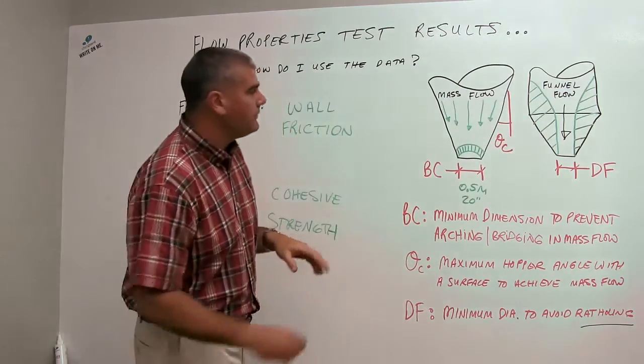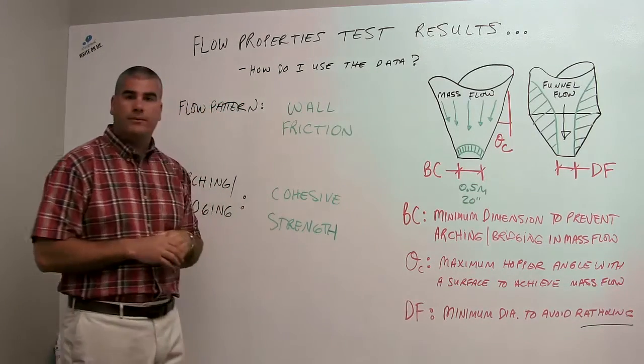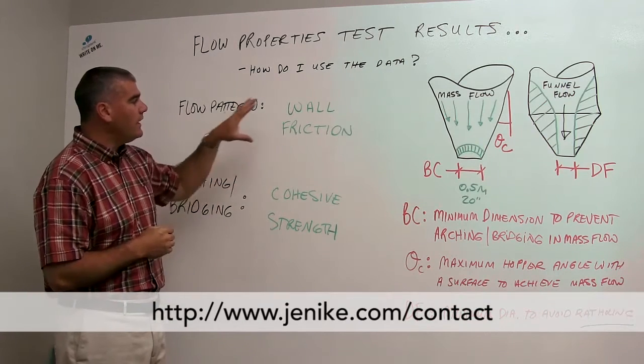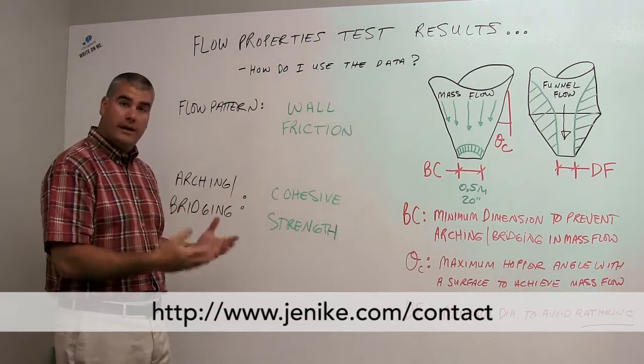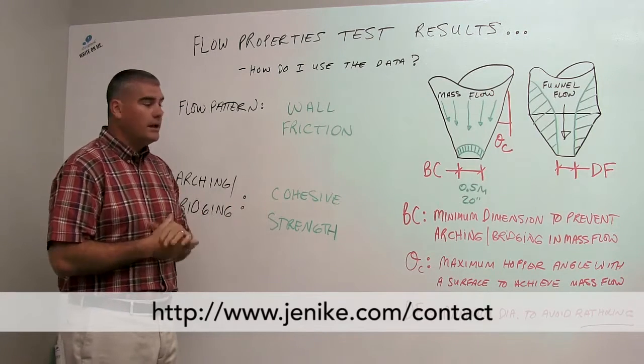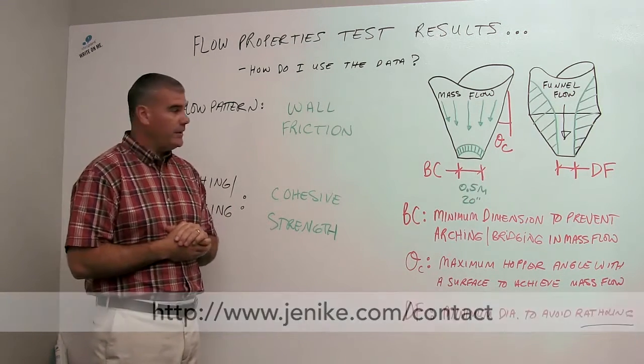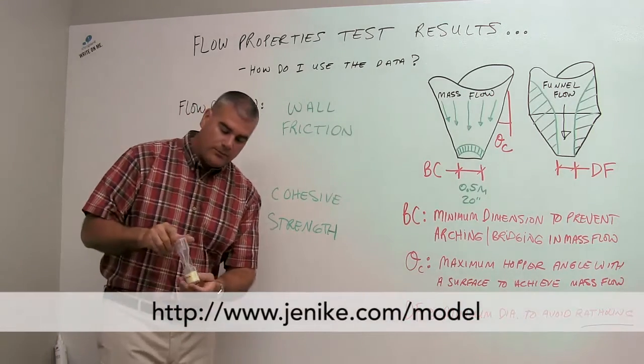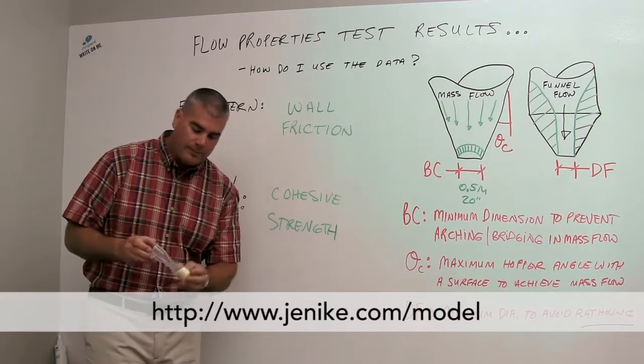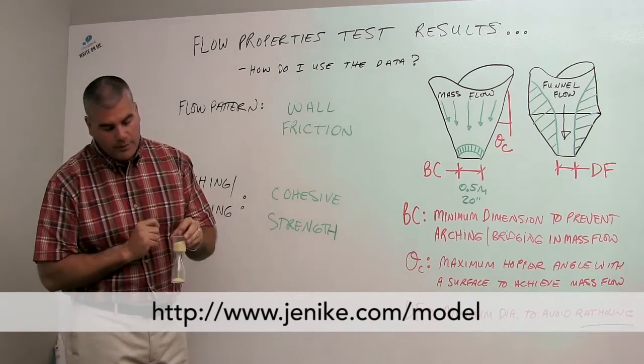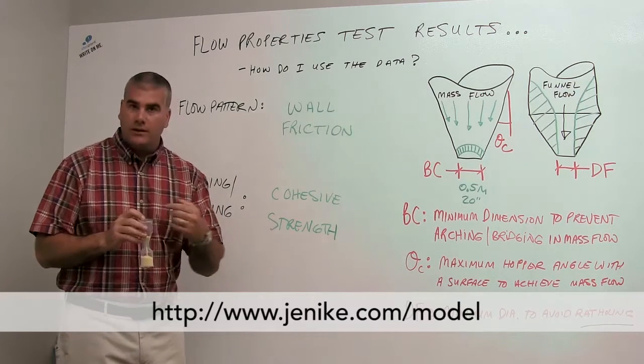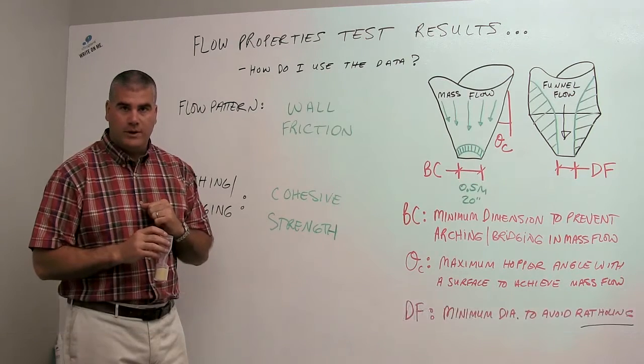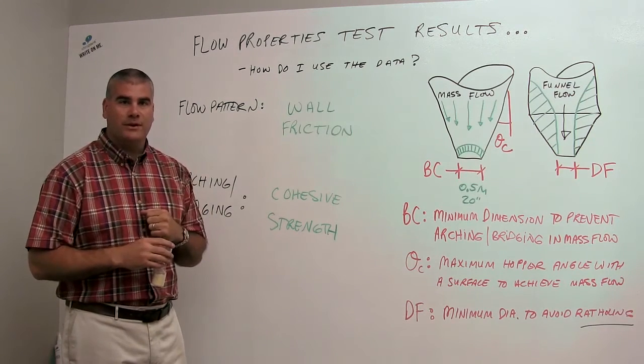So those are the critical features that we see on mass flow and funnel flow bins. I hope you find this information helpful. If you have any questions on how to utilize these data, how to apply them to an actual application, please do not hesitate to contact any of our engineers at Jenike & Johansson for help in that application. In addition, we have our flow visualization models for these small hoppers that show funnel flow behavior as well as mass flow behavior. Check the URL in this video for a link to obtain one of these little demonstration models as well. Thanks a lot for your time. I hope you found this information helpful. Thank you.